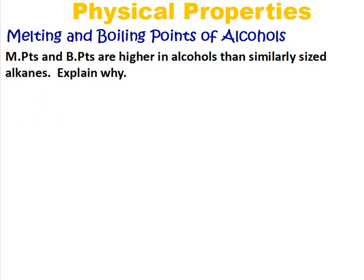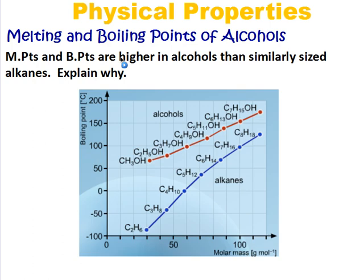Today we're looking at physical properties of alcohols, starting with melting and boiling points. Melting point is the temperature at which a solid becomes a liquid, and boiling point is the temperature at which that substance changes from a liquid to a solid. Alcohols have higher melting and boiling points than similar sized alkanes, as shown in this graph comparing boiling points of alkanes and similar sized alcohols — there's quite a big difference.